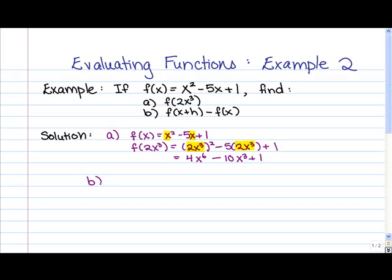So now let's go on to part b. First, let's figure out what f(x+h) is. So f(x), we know, is x² - 5x + 1. So what that means is f(x+h) is going to be what we get when we replace all the x's with x+h. So we're going to end up with (x+h)² - 5(x+h) + 1. And again, all we've done is replace the x's with x+h.